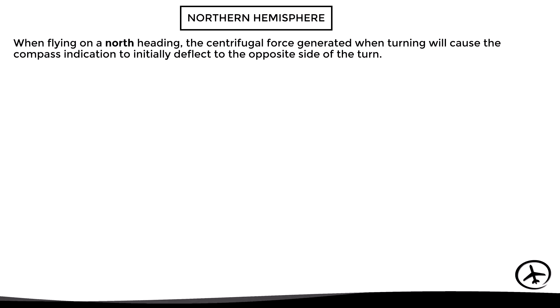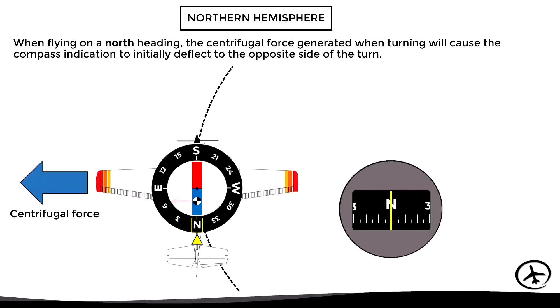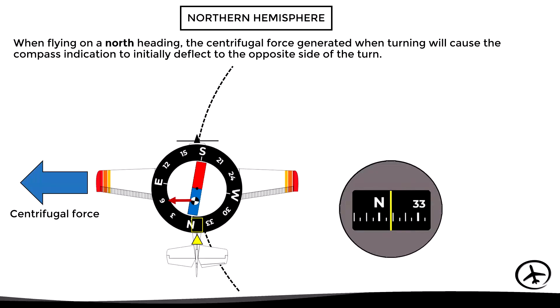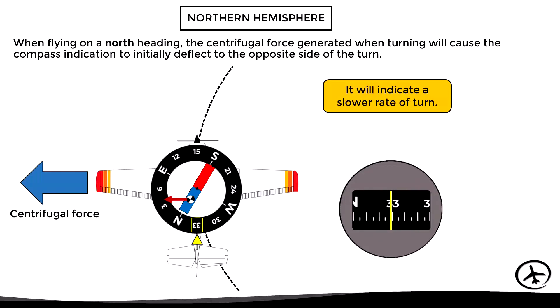In the northern hemisphere, when flying on a north heading, the centrifugal force generated when turning will cause the compass to initially deflect to the opposite side of the turn. For example, with an aircraft flying north, the center of gravity is shifted due to magnetic dip. If the aircraft starts turning to the right, the centrifugal force pulls on the magnet's center of gravity, causing the compass to initially indicate a turn to the left. This is temporary; eventually the compass will indicate the correct direction but with a slower rate of turn — the compass lags the turn.